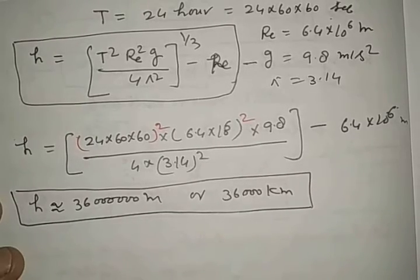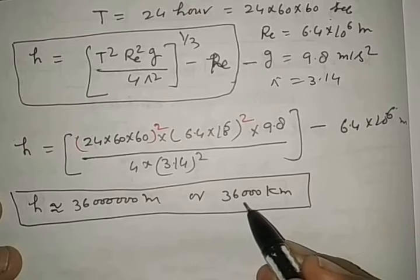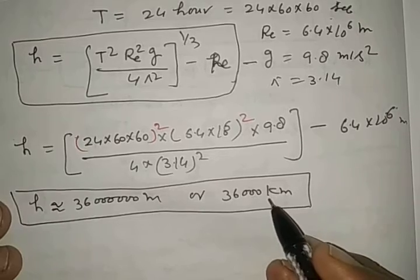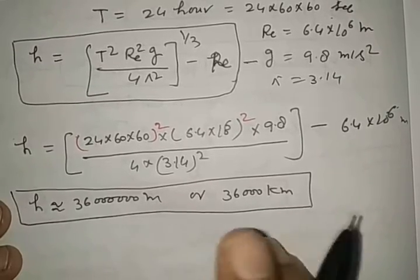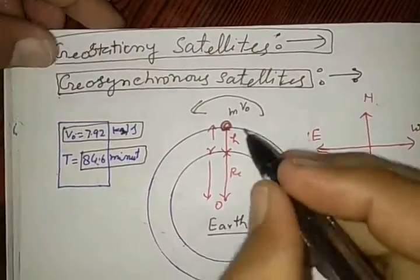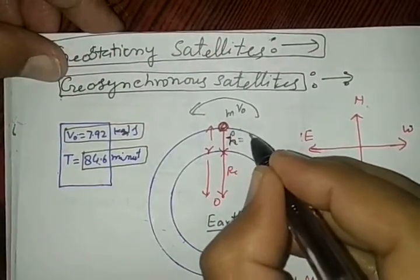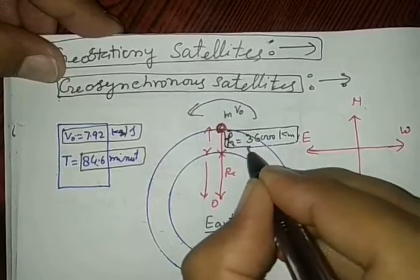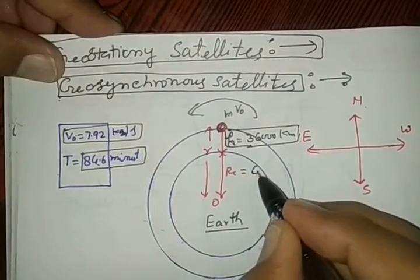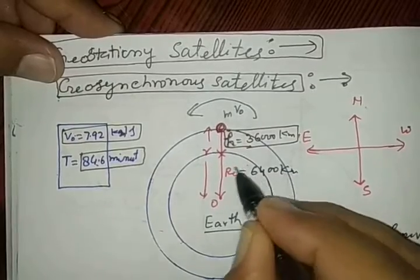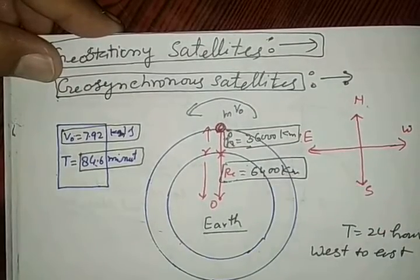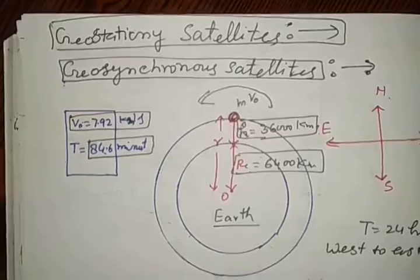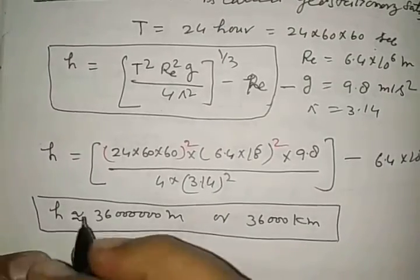The height is approximately 36,000,000 meters or 36,000 km. If you want to launch a geostationary satellite which always remains stationary to an observer on Earth, its height must be 36,000 km away from Earth's surface. The radius of Earth is only 6,400 km, so it is much more than the radius required to launch a geostationary satellite.